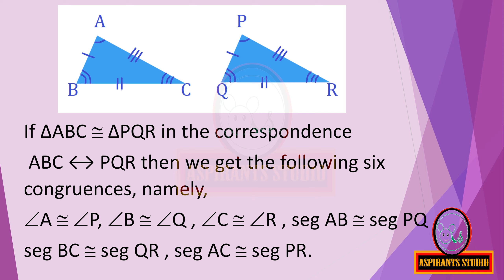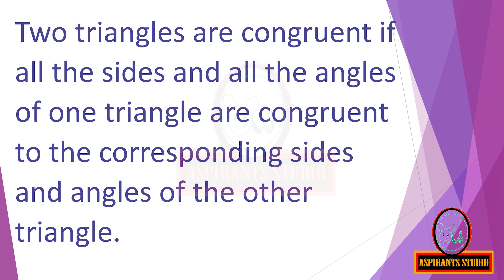If triangle ABC is congruent to triangle PQR in the correspondence ABC corresponds to PQR, then we get the following six congruences. Two triangles are congruent if all the sides and all the angles of one triangle are congruent to the corresponding sides and angles of the other triangle.